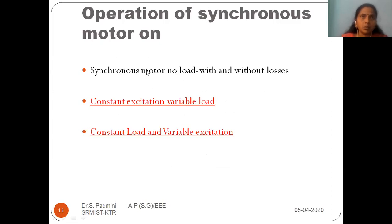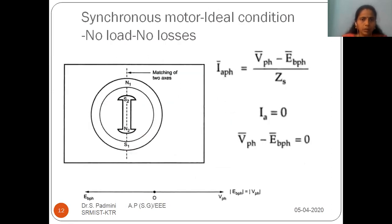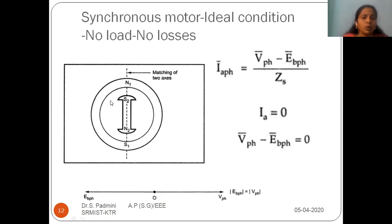Today we start with the first topic: how the synchronous motor behaves on no-load with and without losses. We consider the ideal condition — no load, no losses. In this case, we adjust the excitation such that the back EMF E-phase equals V-phase. This creates the condition of magnetic locking between the rotor and stator poles, and the synchronous motor starts rotating.